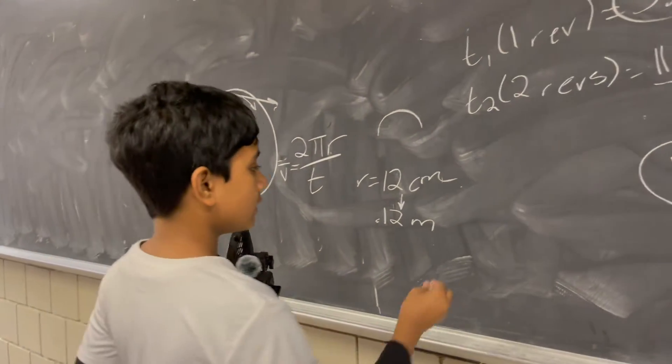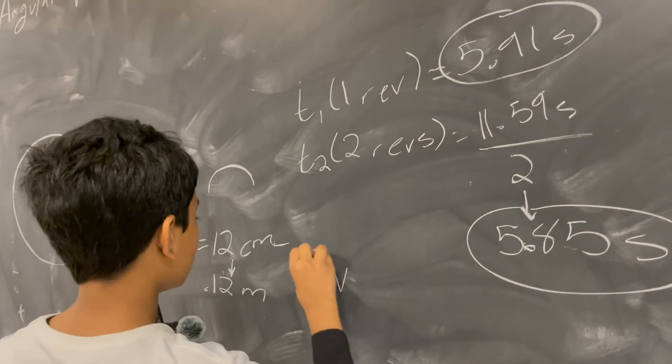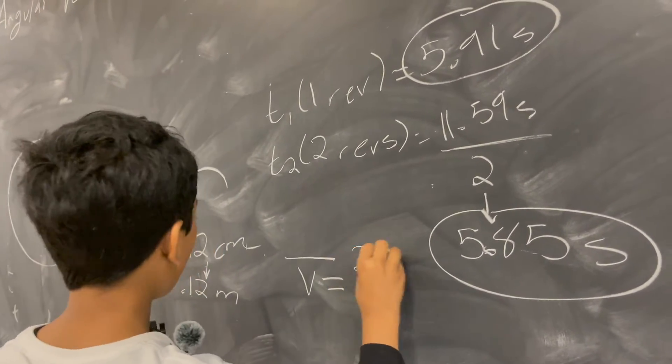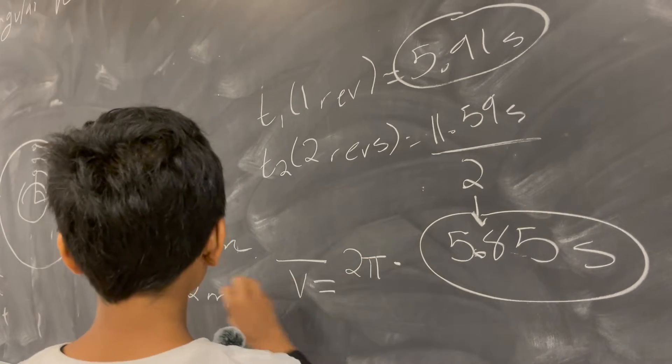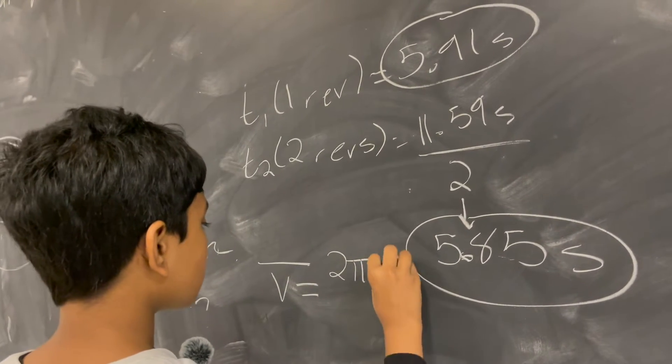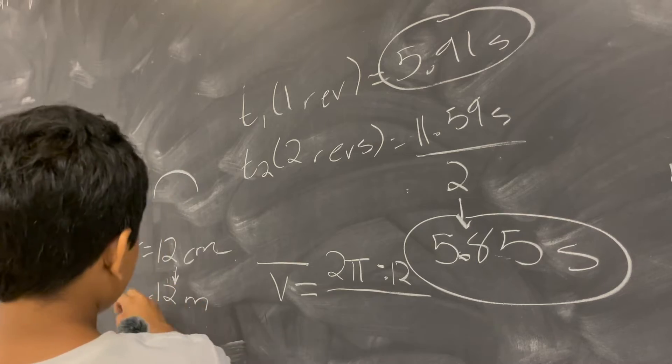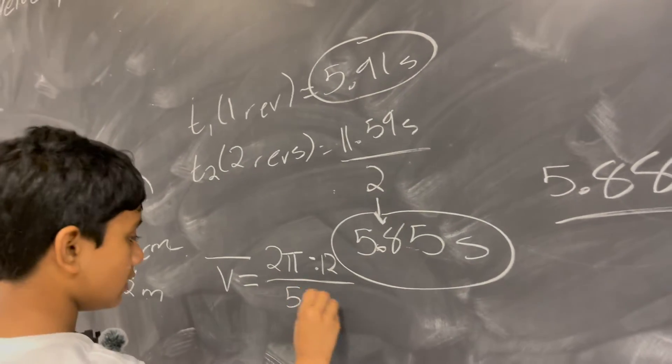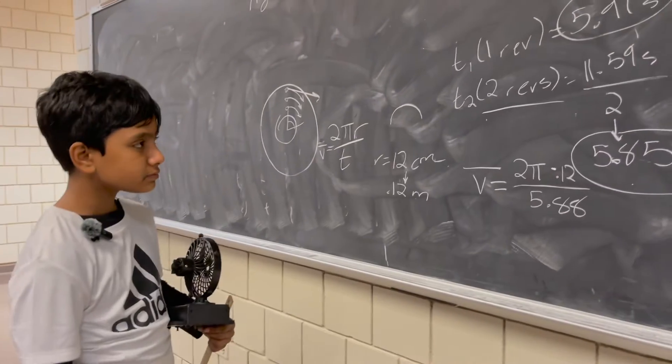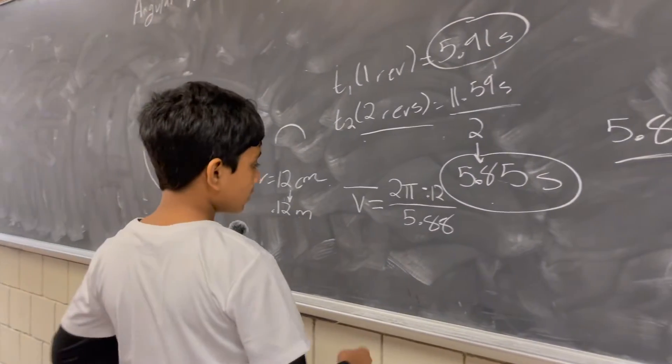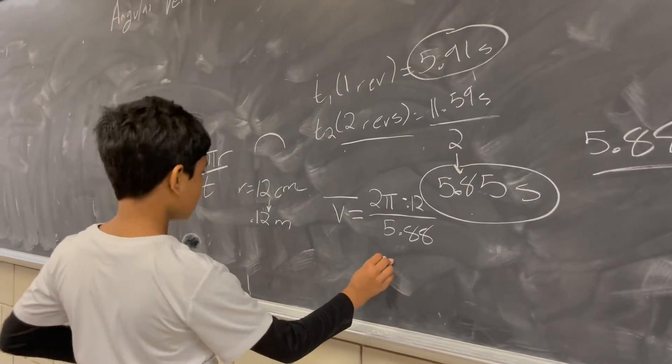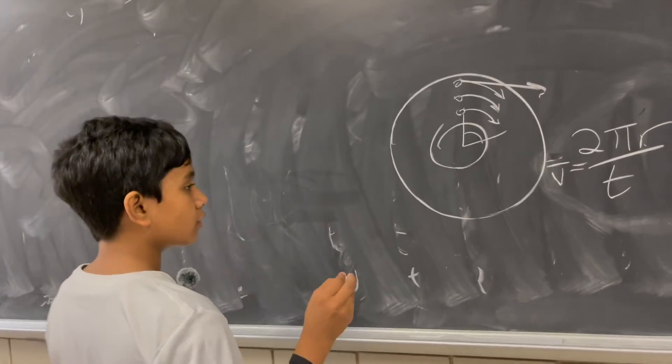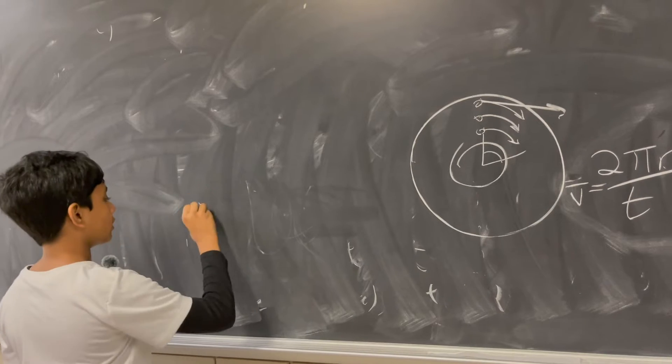So that means that the average tangential velocity is going to be equal to 2 pi times 0.12 divided by the time, which was on average 5.88. Now we're going to find the average velocity.